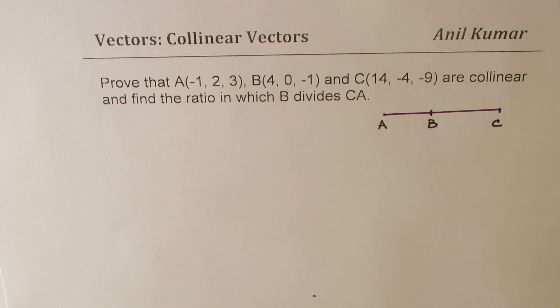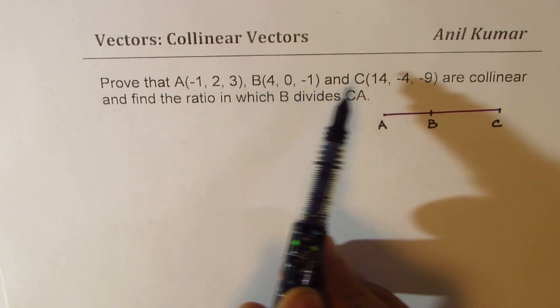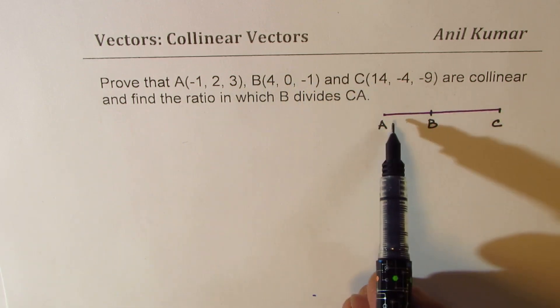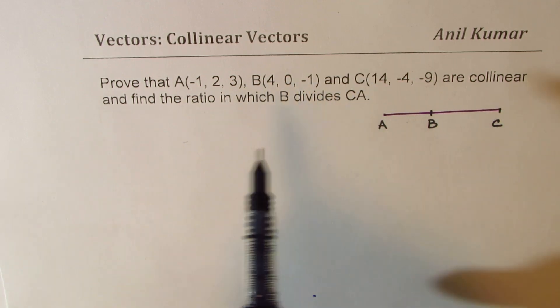To show that they are collinear, we are going to first find the vector AB and then BC and see if they are scalar multiples or not.